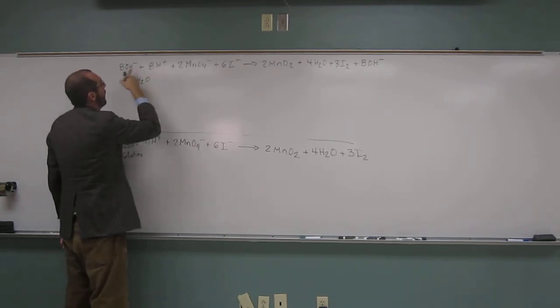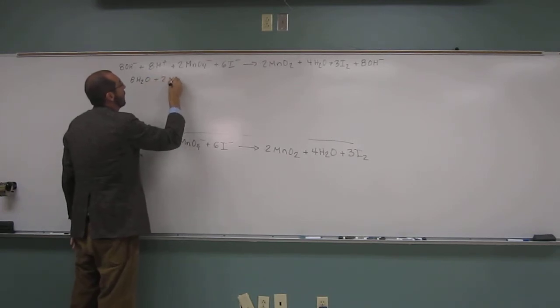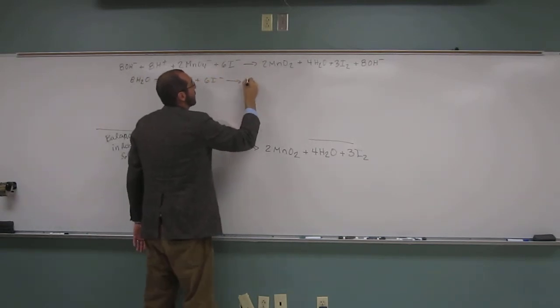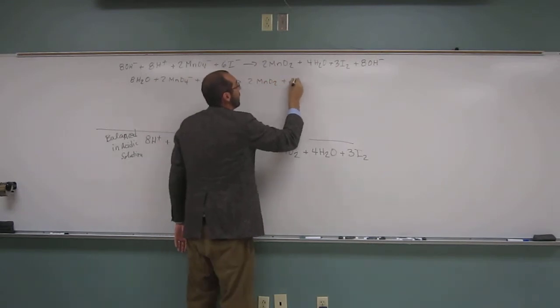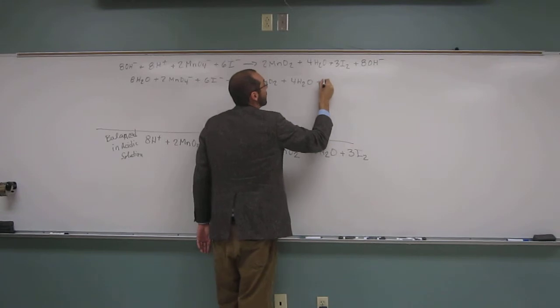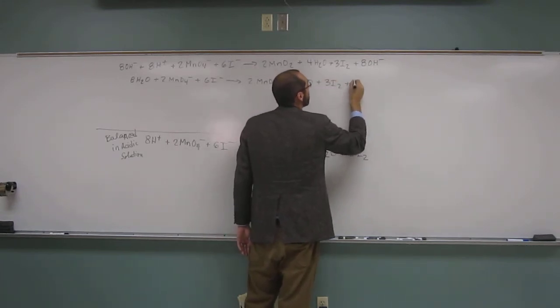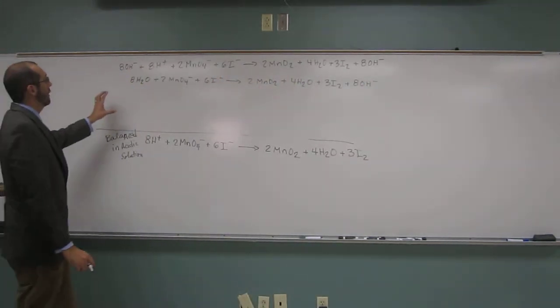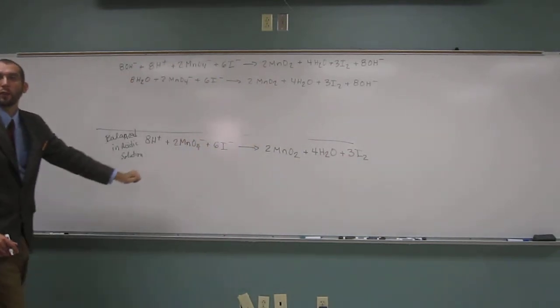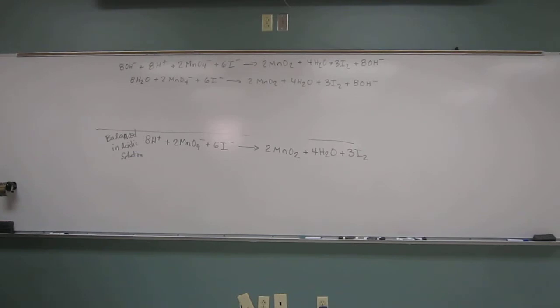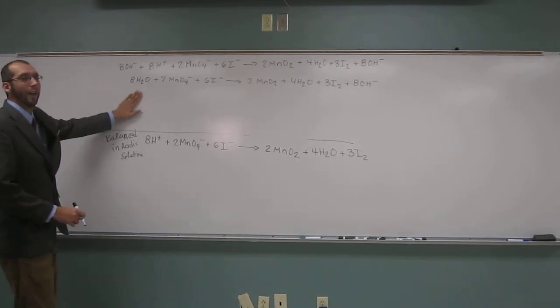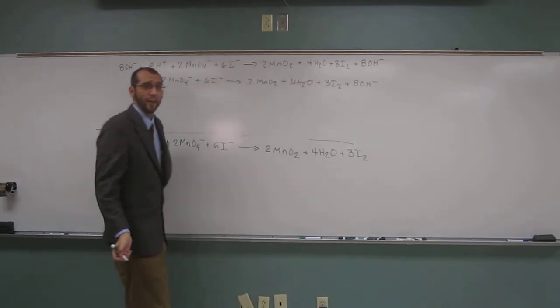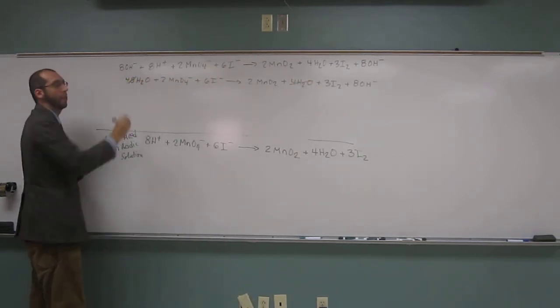Just make sure. So eight H2O plus two MnO4- plus six I- goes to two MnO2 plus four H2O plus three I2 plus eight OH-. We're almost done. So do you see anything that's the same on the left side as on the right side of the reaction? Yes, H2O's. So how many do we have here? Eight. And over here? Four. So we're going to cancel out four, and it's going to be a four.